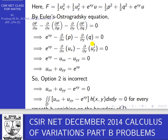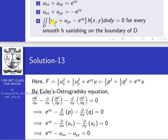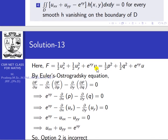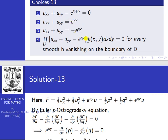Rewriting as uxx + uyy − e^(xy) = 0, and substituting into the integral in option four, we get the double integral over d of 0 · h(x,y) dx dy = 0, which is always true. So option four is also correct. Therefore, options two and four are the correct answers, while options one and three are wrong. Thank you.